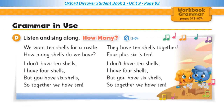Page 93. Grammar in use. Listen and sing along: How Many. We want ten shells for a castle — how many shells do we have? I don't have ten shells, I have four shells. But you have six shells. So, together we have ten shells. They have ten shells together — four plus six is ten.